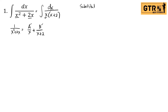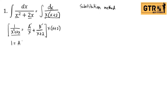Using the substitution method to solve the values of A and B: we have 1 over X squared plus 2X equals A over X plus B over X plus 2, where X squared plus 2X is the same as X times X plus 2. We multiply both sides of the equation by X times X plus 2 to get rid of the denominators. So: 1 equals A times X plus 2, canceling X and X, plus B times X, canceling X plus 2 and X plus 2.